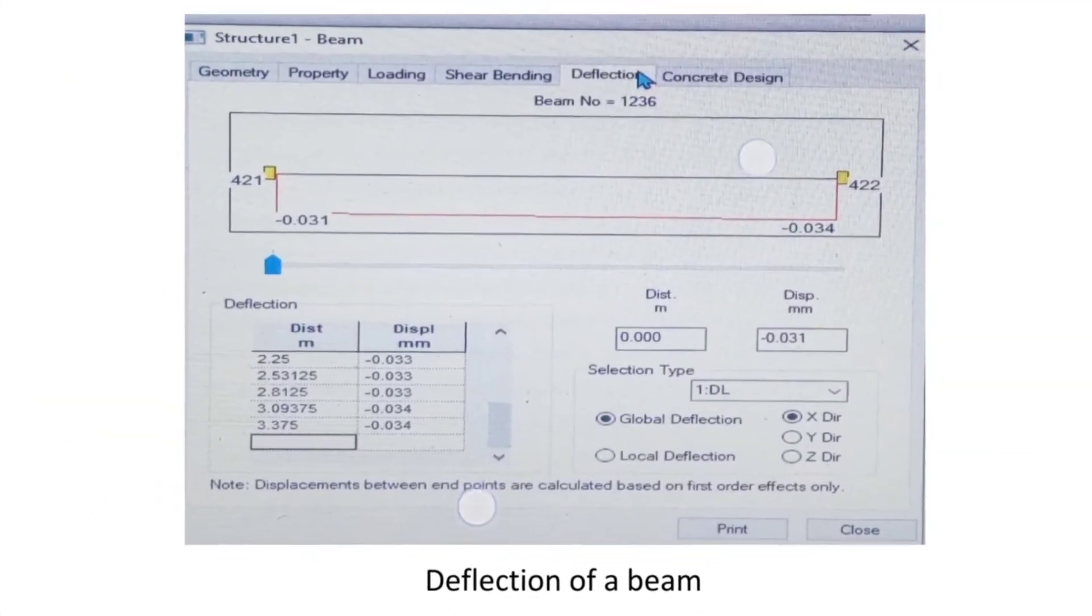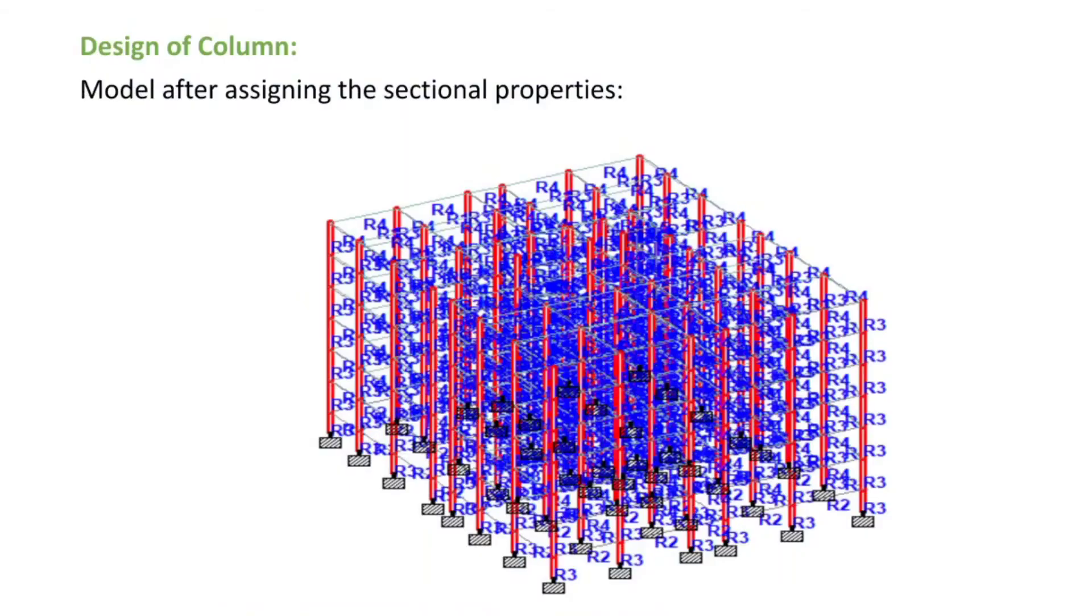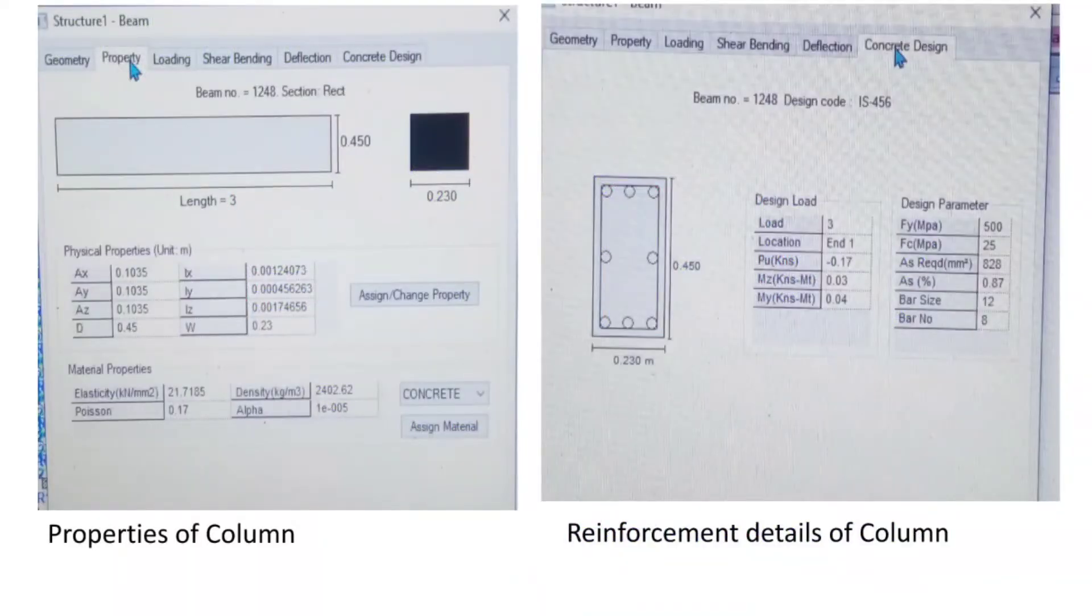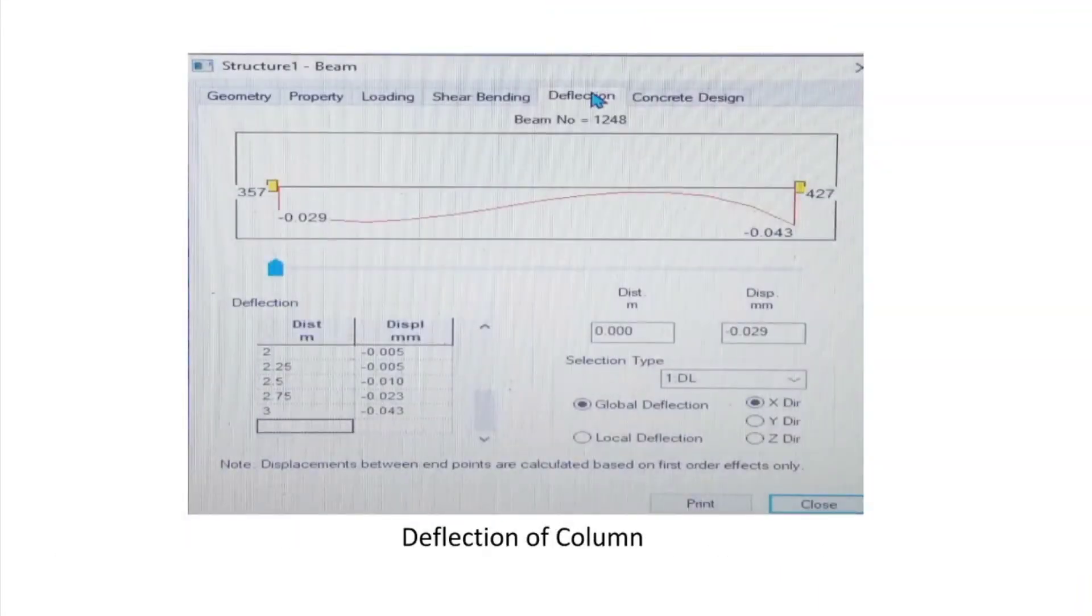Next, designing of columns. This is the picture model after assigning the sectional properties. This is the report of properties of the column and the reinforcement details of the column, and this is the deflection of the column.